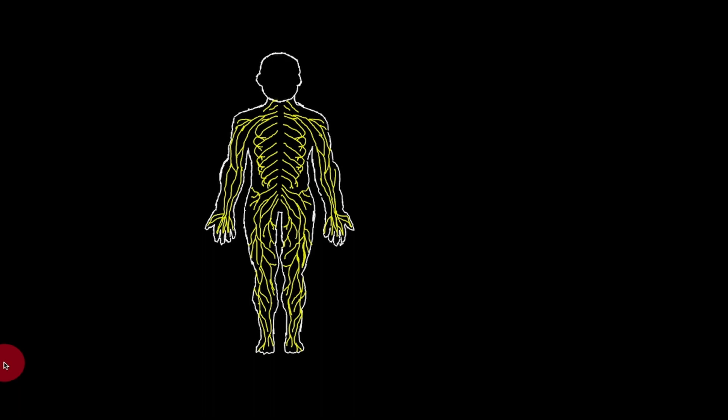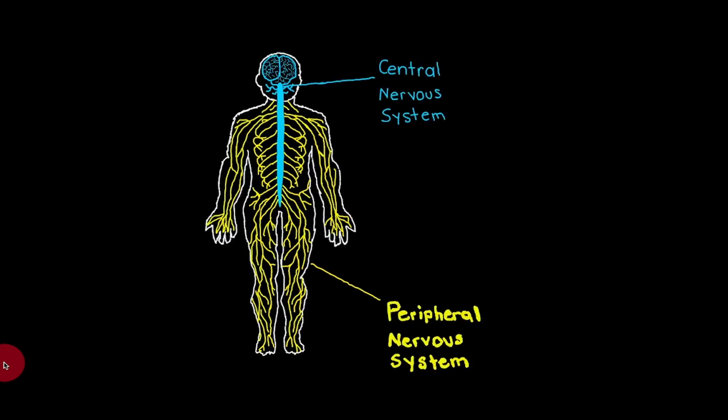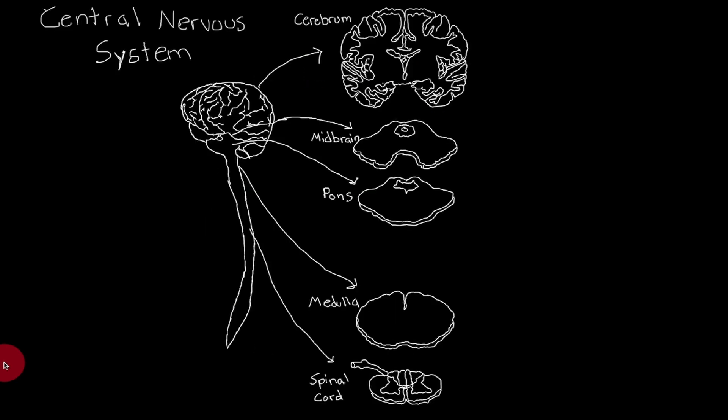Before we get into the rubrospinal tract, I'm gonna do a quick overview of the nervous system. Within the body, you have peripheral nerves that send and receive signals to and from the central nervous system. The central nervous system is comprised of the brain and the spinal cord, and we're gonna break it down a little further.